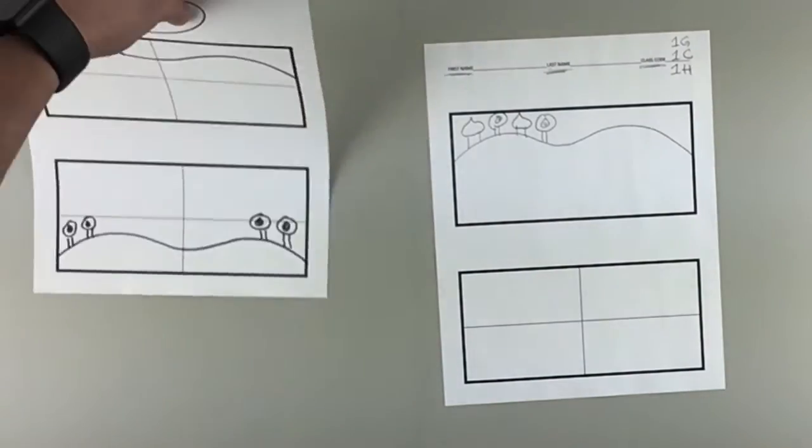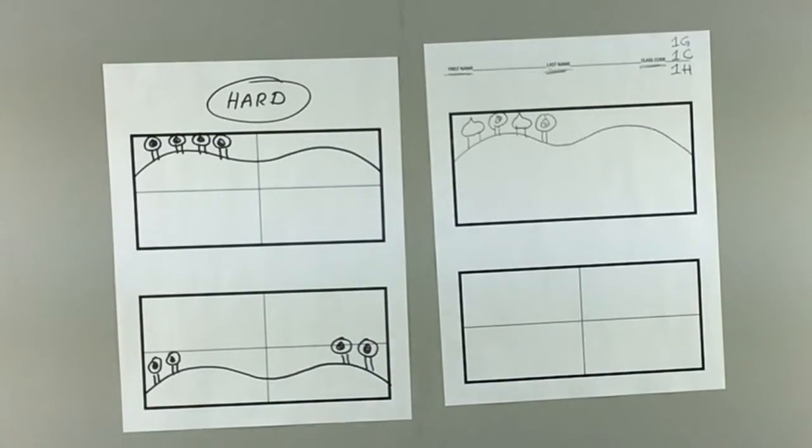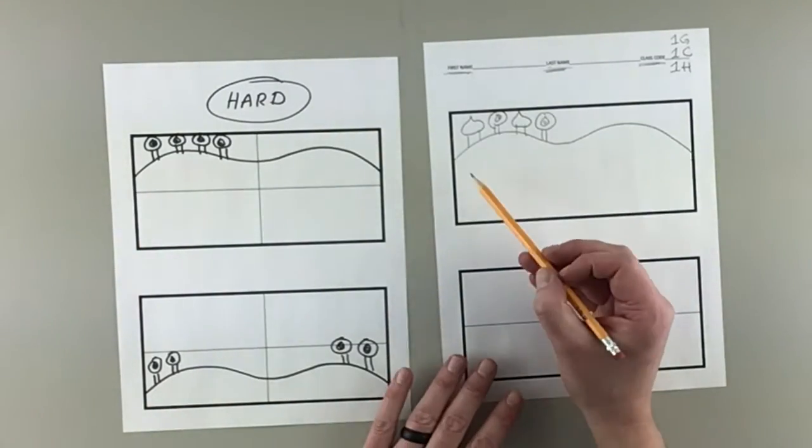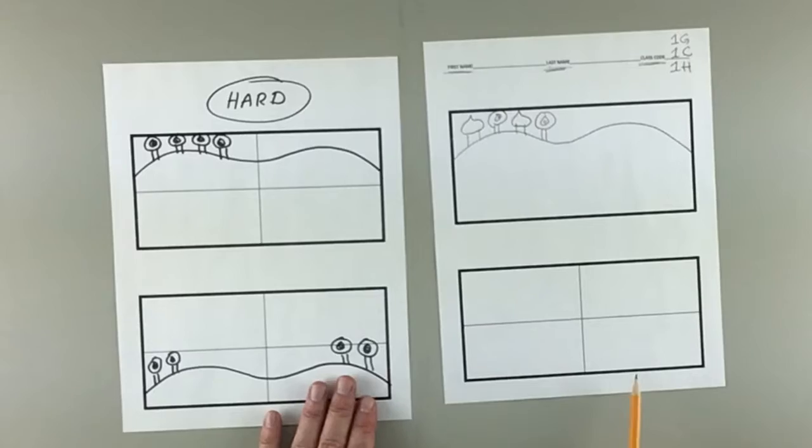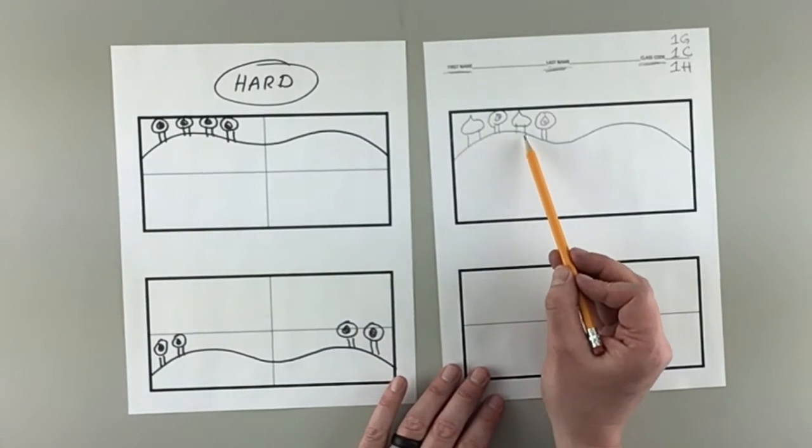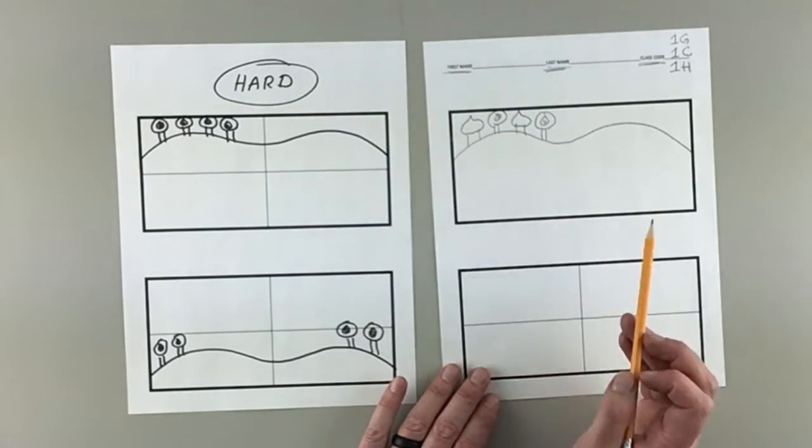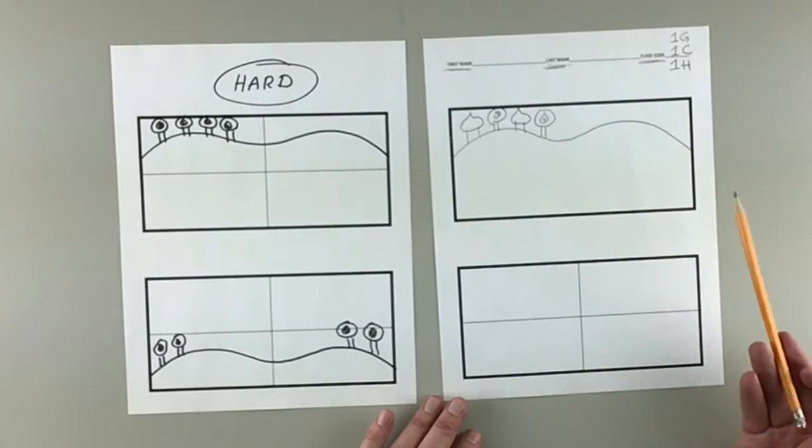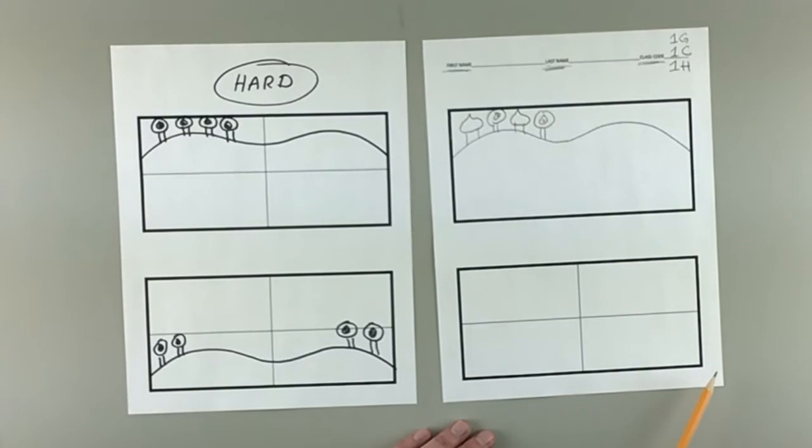Now that you have your idea drawn down with what we're going to do, what kind of horizon line you want, what kind of buildings and trees you want, now we're going to focus on making it better by using the grid on the bottom.